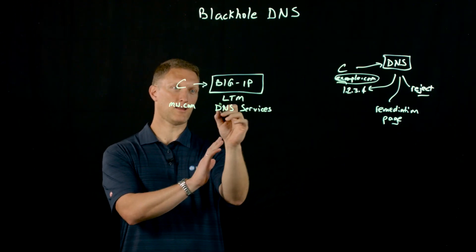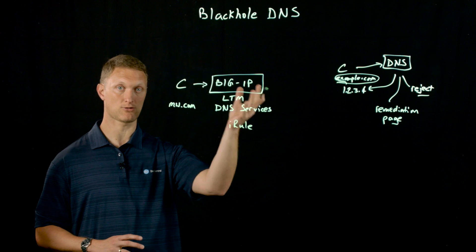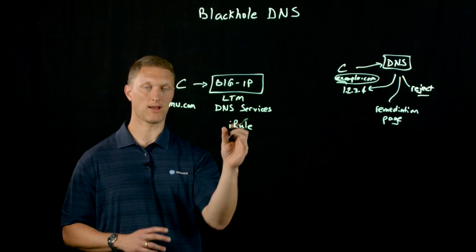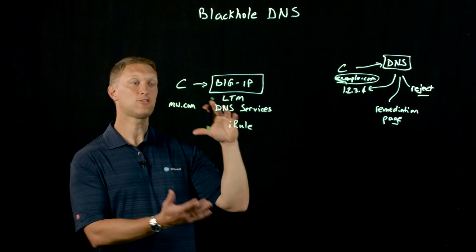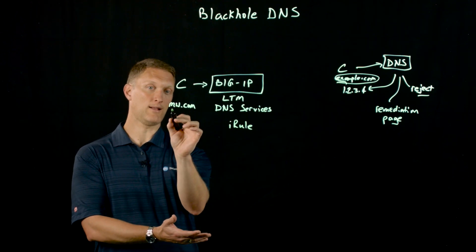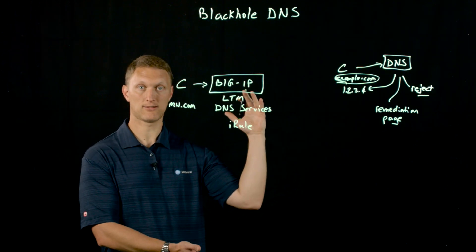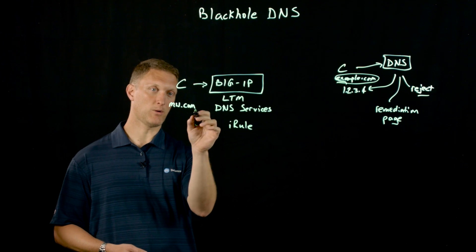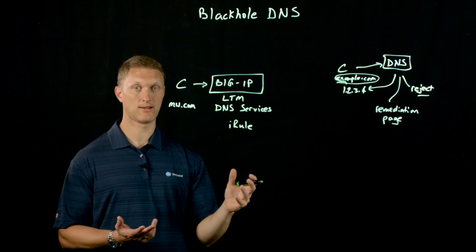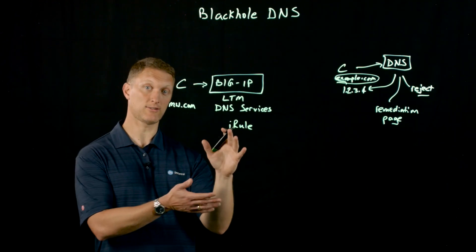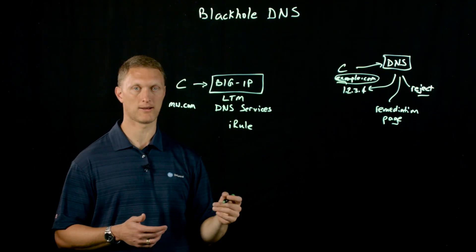What you can do on the BIG-IP — it's got LTM and DNS services provisioned — you can add an iRule to the virtual server that listens for this DNS traffic. You can do a few things with this iRule, and in fact this iRule already exists out there on Dev Central — we'll link to it so you can check it out. Functionally, what this thing does is it's going to look at the domain name that comes in from the client's request and check that against a known list of bad domain names. If the requested domain name matches a bad one, it's going to come back with a different IP address, maybe the remediation page IP address. You actually set that IP address in the iRule as well, so you can set it to whatever you want.